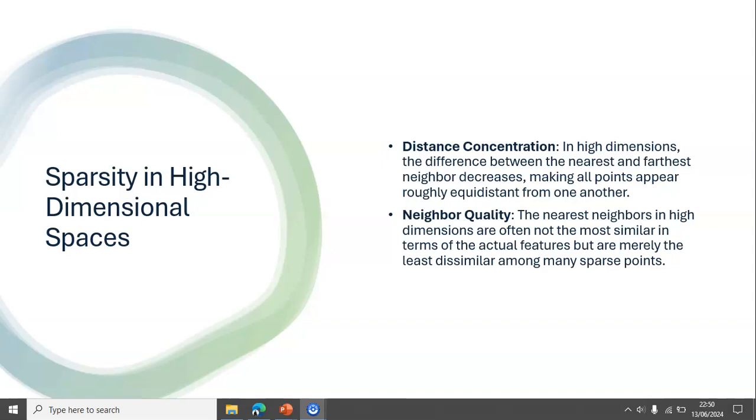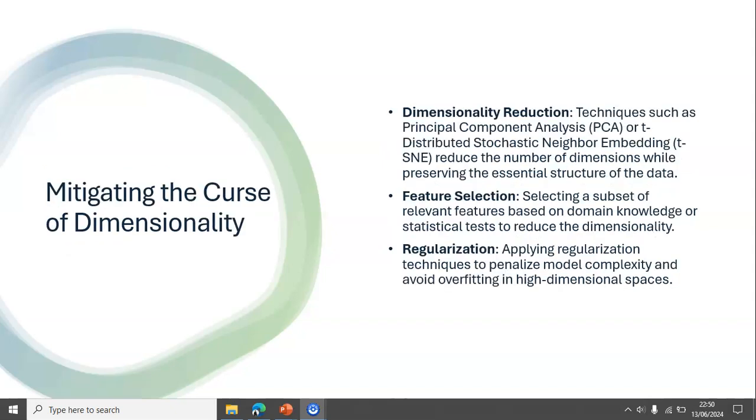Distance concentration is another issue. Various ways of mitigating the curse of dimensionality include regularization, feature selection, and dimensionality reduction by using components such as Principal Component Analysis and Stochastic Neighbor Embedding.